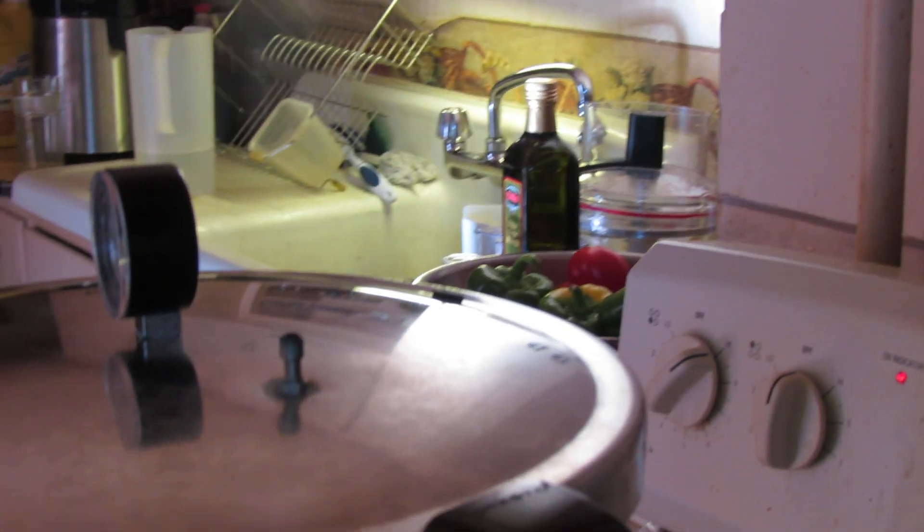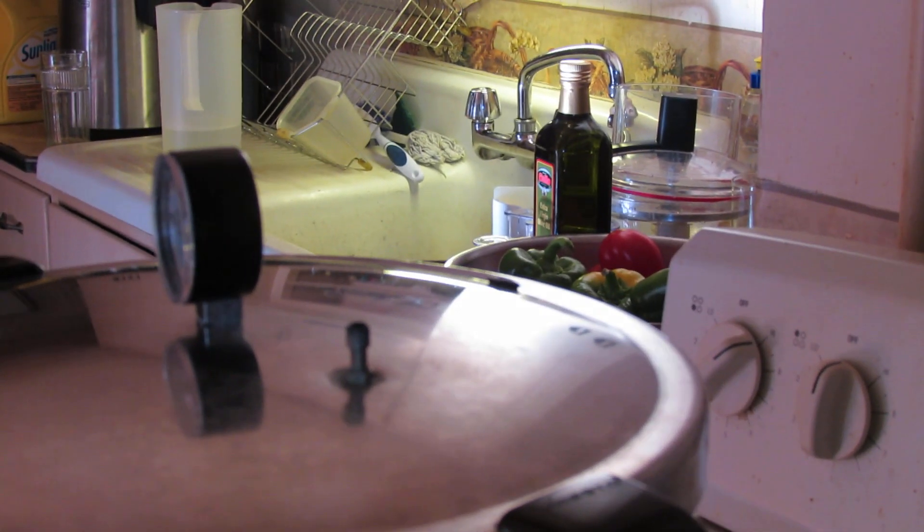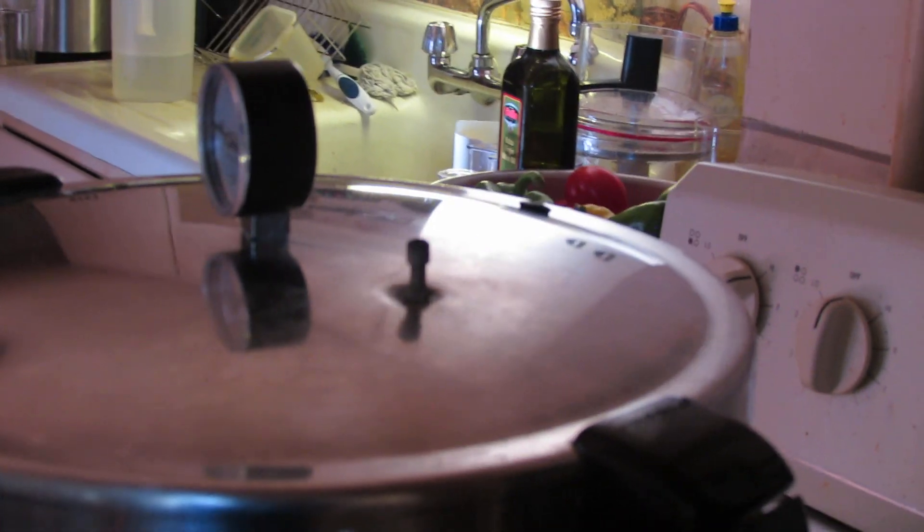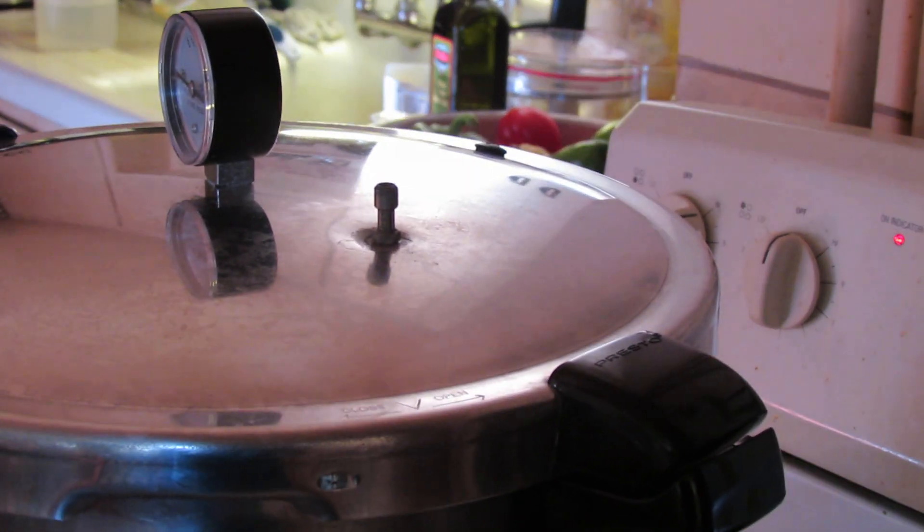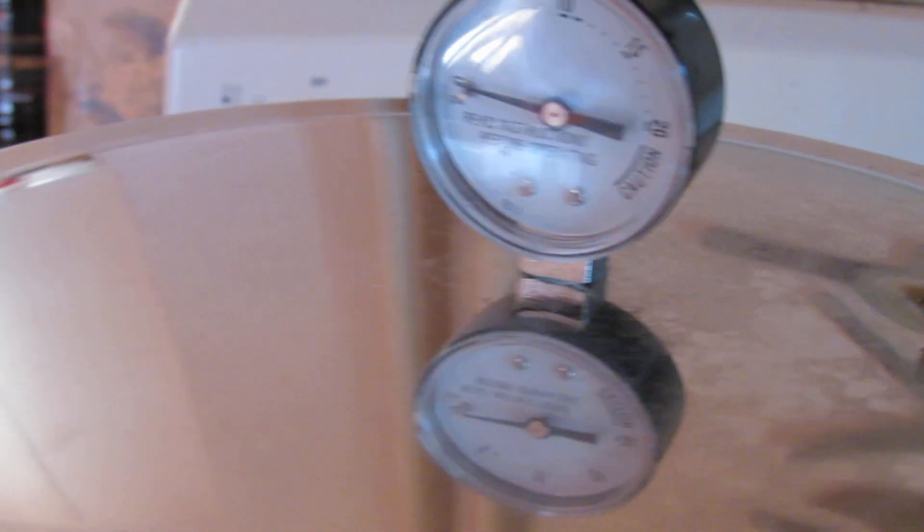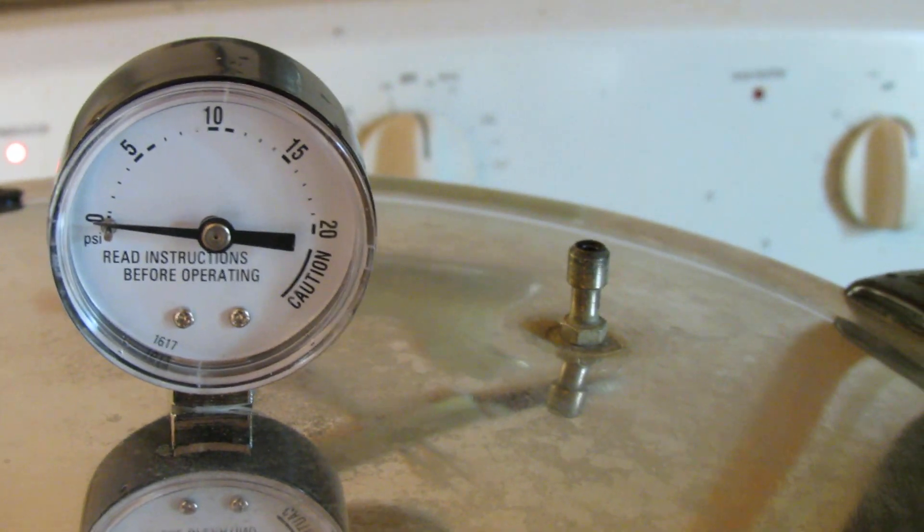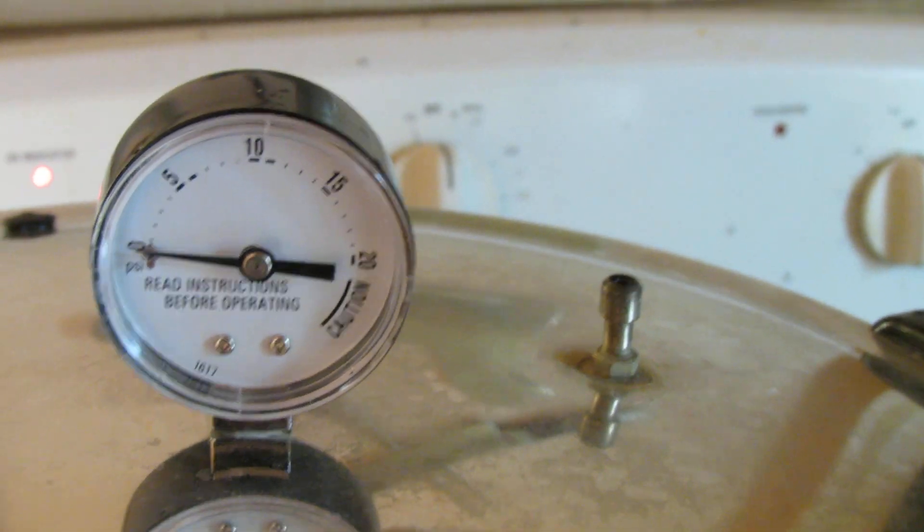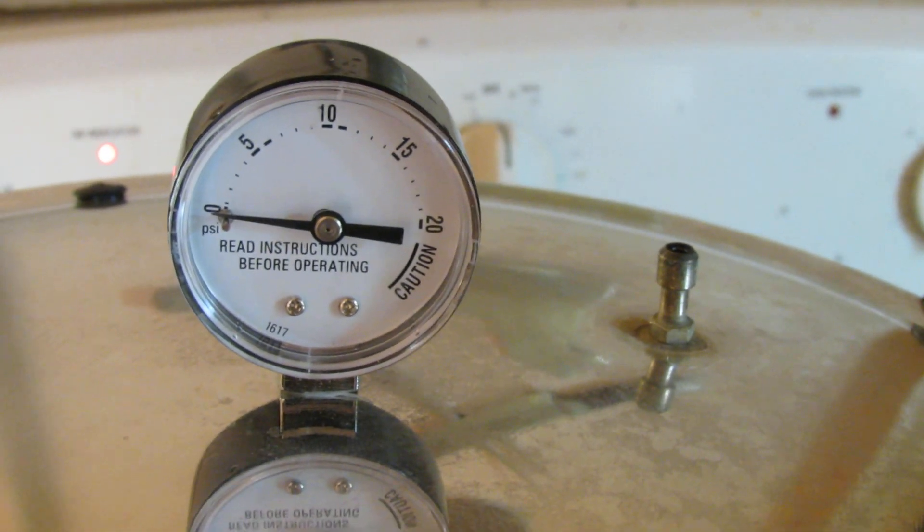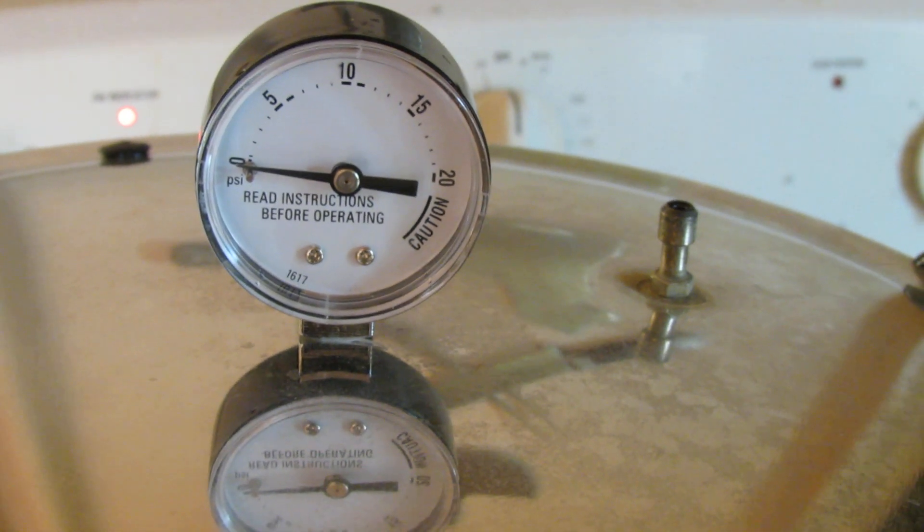So once you get your steady stream of steam coming out of the vent hole for 10 minutes, like I showed you, you put your weight on. Then you let your pressure gauge come up to the prescribed level of pressure you need to can at your elevation.